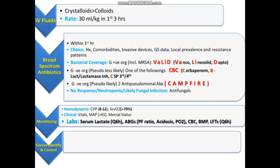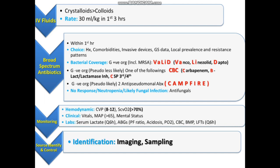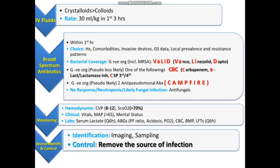At the end, we control the source after identifying it. We identify the source using imaging and sampling of any suspected infection site. To control the source, we remove any vascular access or infected implantable devices, drain any abscess, and if the infection is in the kidneys, we perform percutaneous nephrostomy.